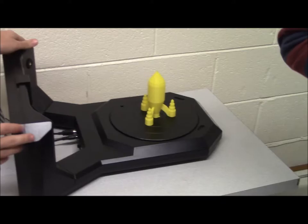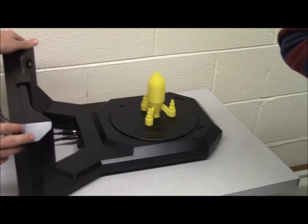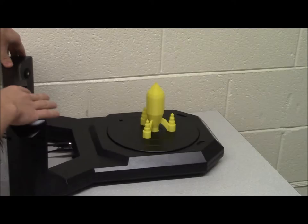And then finally we have the MakerBot scanner, where the scanner is stationary. It has laser sensors and I believe two cameras, and then it will rotate the table and take a picture of the image.